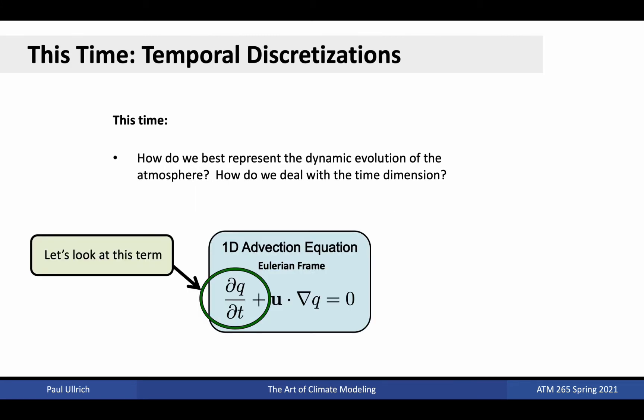However, we didn't talk about how to represent temporal derivatives. Even if we can reduce our partial differential equations to a set of ordinary differential equations, we still need to solve those ordinary differential equations somehow. This motivates the question: how do we best represent the dynamic evolution of the atmosphere, or how do we deal with the time dimension?